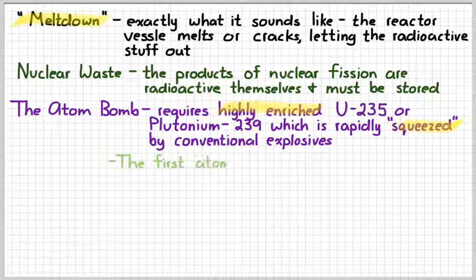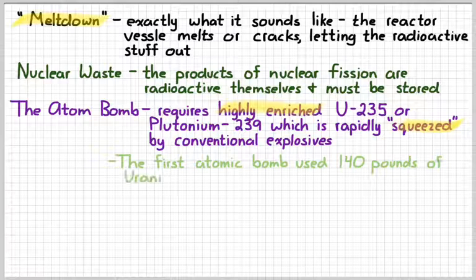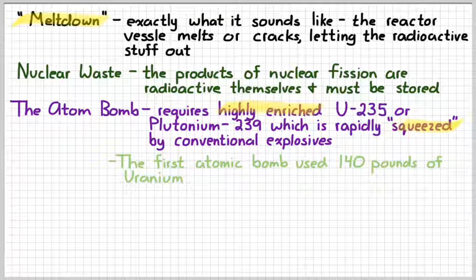Another fun fact, the first atomic bomb used 140 pounds of enriched uranium. So if you think about 140 pounds, that's about the size of a person, give or take, which is enough when you make it undergo nuclear fission to destroy a medium-sized city.